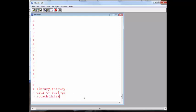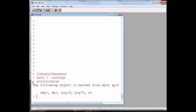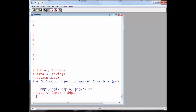I'm going to call the fairway library and pull the savings data, call it data, and attach data so I don't have to keep typing data all the time. I'm going to build three models and compare them. One is just going to be this SR variable versus DDPI. Just a plain Jane linear model.